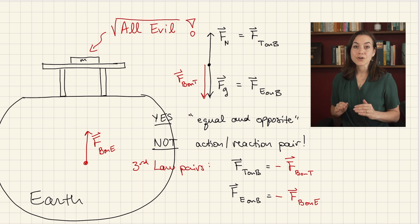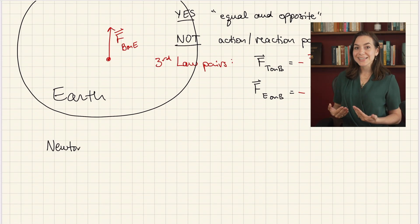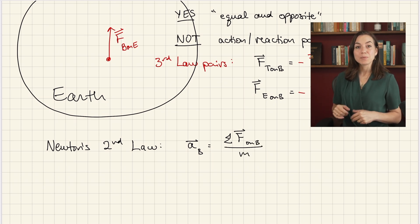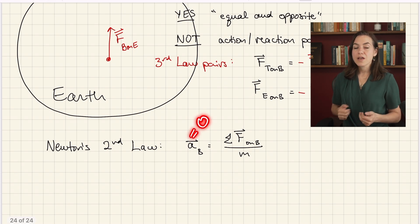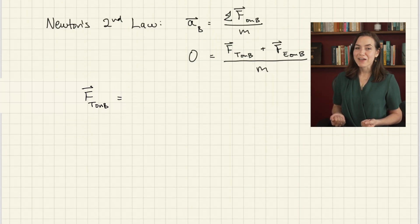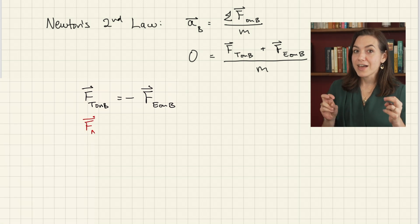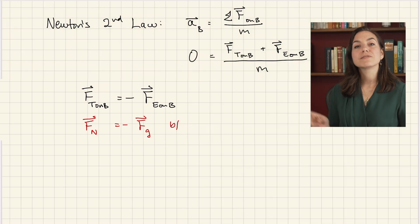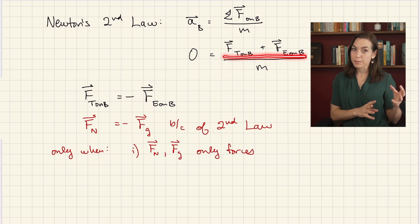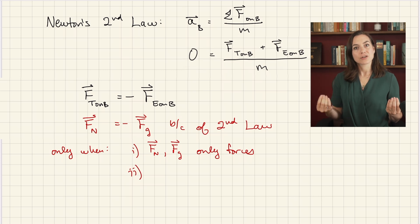So let's understand why these are the same in this case so that we can then figure out how they can be different. Ft on B and Fe on B are not a third law pair, but they do both act on the book, which means they affect the book's motion as dictated by Newton's second law. The resulting acceleration of the book is the sum of all forces exerted on the book over the mass of the book. In this case, the book is stationary, which means its acceleration is zero. And therefore, the sum of all forces acting on it must also be zero. The second law gives zero equals Ft on B plus Fe on B over M. So Ft on B equals negative Fe on B. Thus, Fn and Fg are equal and opposite because of Newton's second law, and only in the special case where Fn and Fg are the only two forces exerted on the object in the vertical direction, and the vertical acceleration is zero.